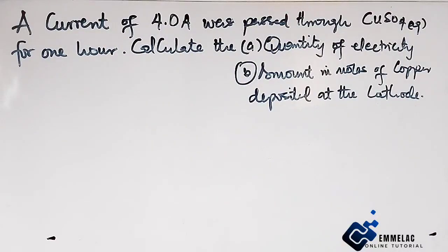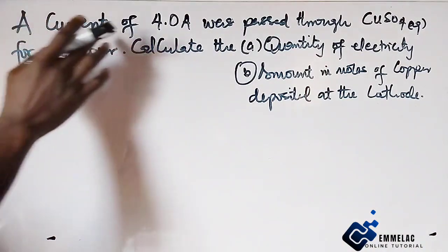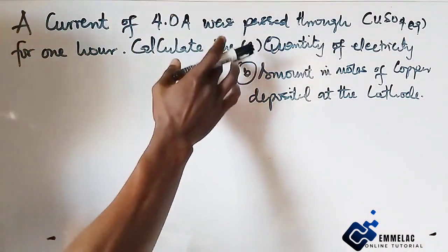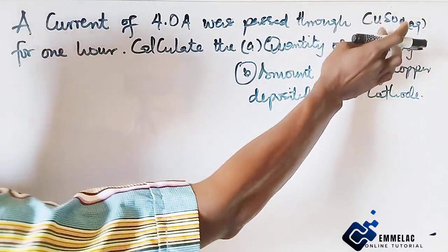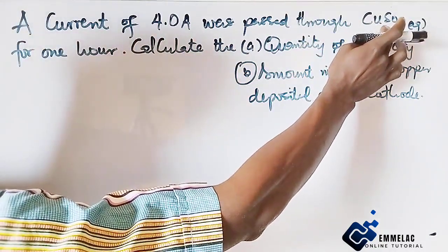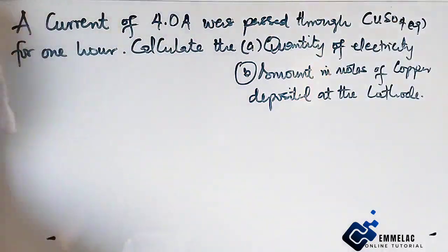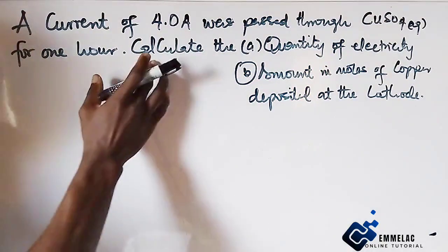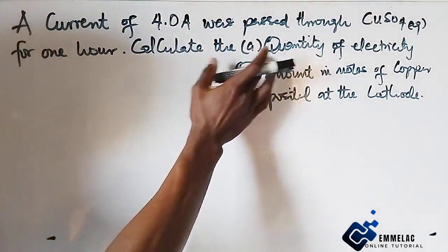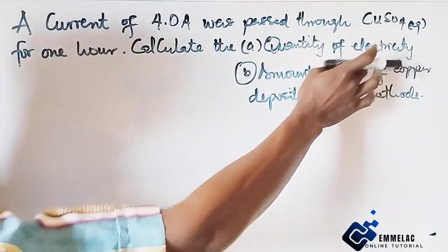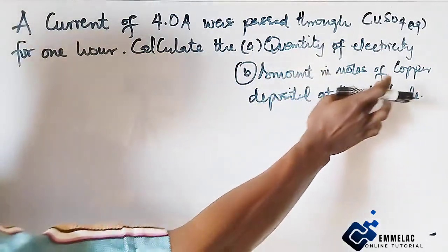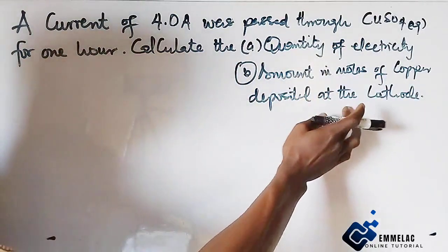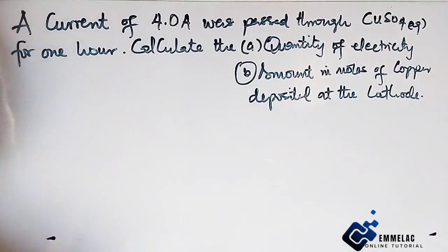Welcome to MLAC online tutorial. Before us is this question that says a current of 4.0 Ampere was passed through copper tetraoxosulfate(VI) solution for one hour. Calculate (a) quantity of electricity and (b) the amount in moles of copper deposited at the cathode.